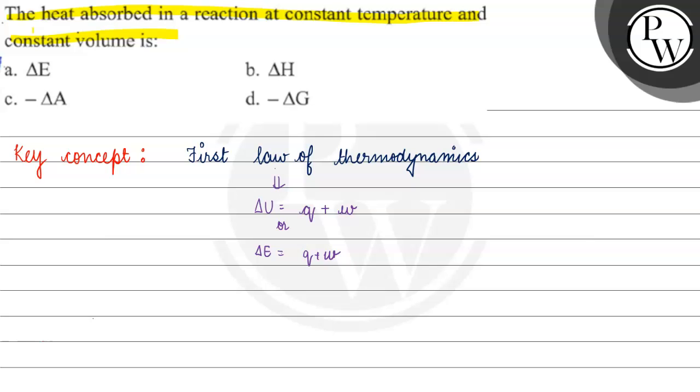Now, if we talk about W, then W is minus P delta V, or P into delta V, we can write. So, if we look at delta E is equals to Q minus P delta V.